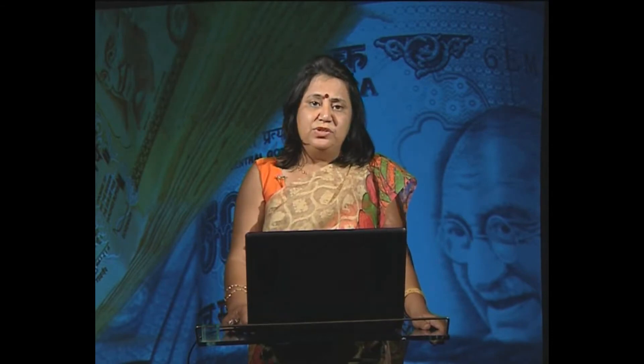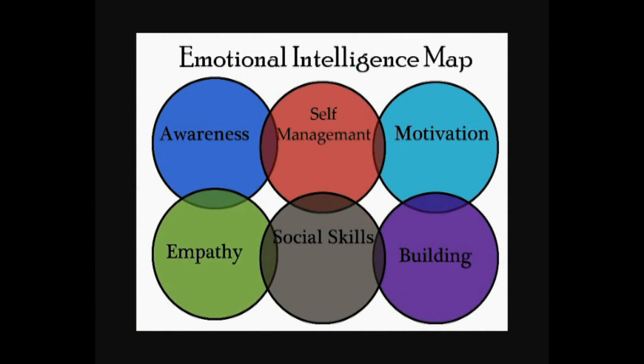Looking at the emotional intelligence map, we have parameters defined as self-awareness, self-management, motivation, empathy, social skills, and building bonds. Bonds are built through collaborations and team abilities.